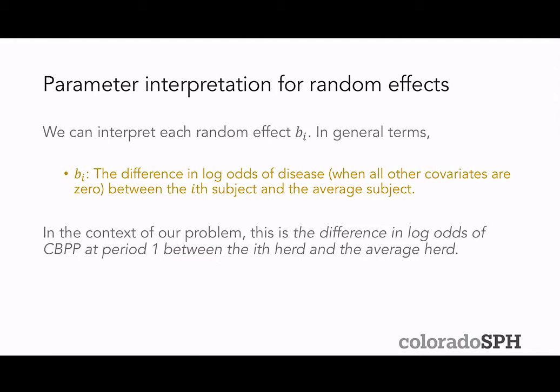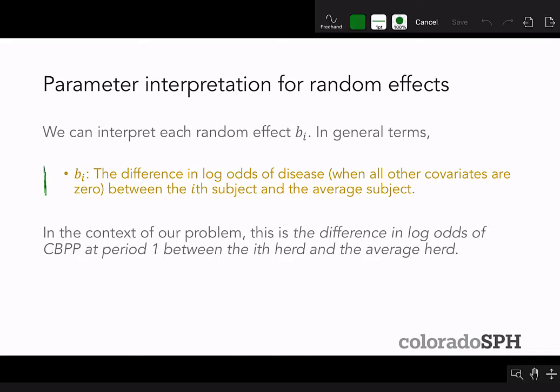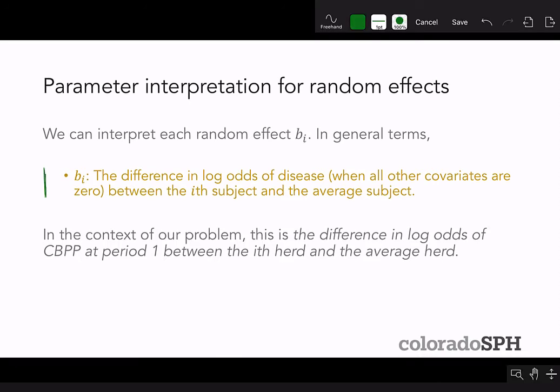Each random effect B_i can also be interpreted. Generally, B_i is the difference in log odds of disease when all other covariates are zero between the ith subject and the average subject. In the context of this problem, it's the difference in log odds of CBPP at period one between the ith herd and the average herd — that's the subject-specific interpretation.